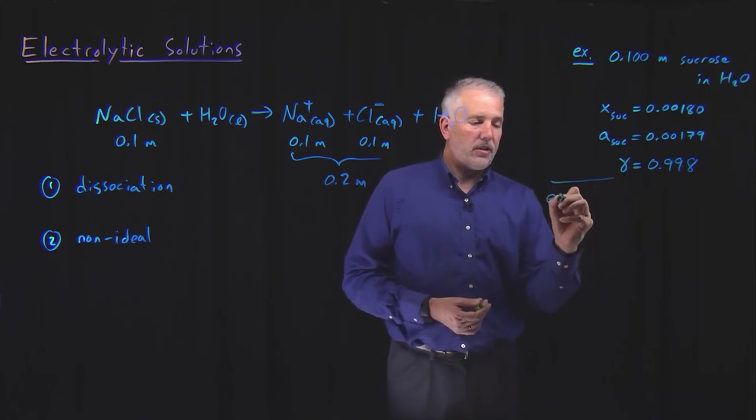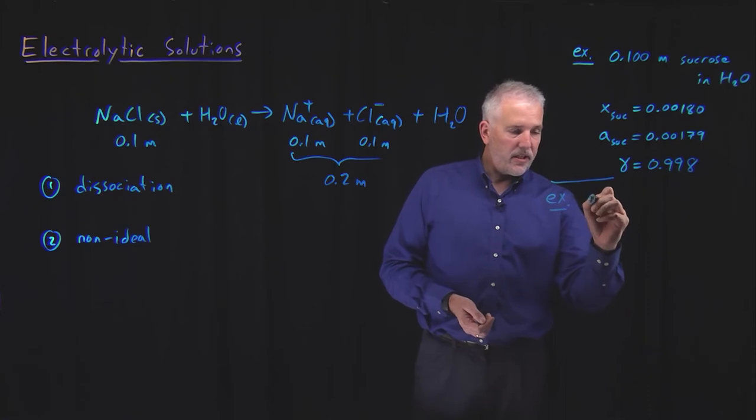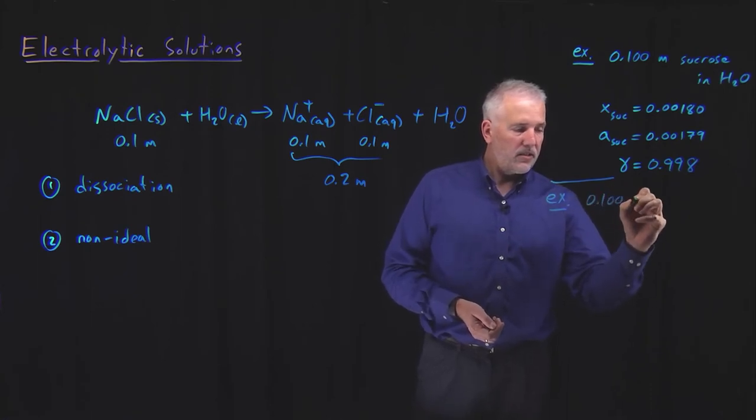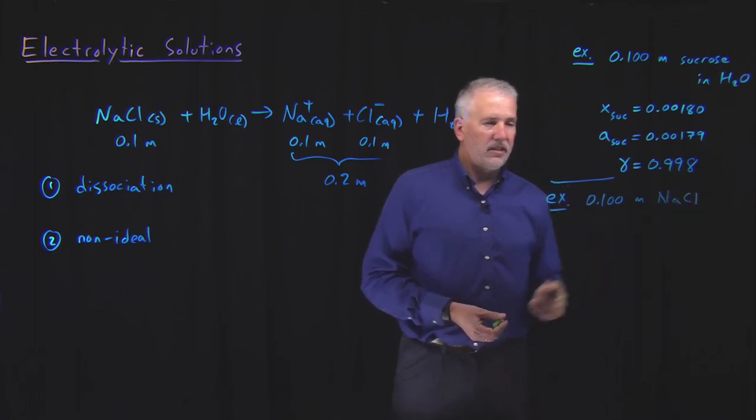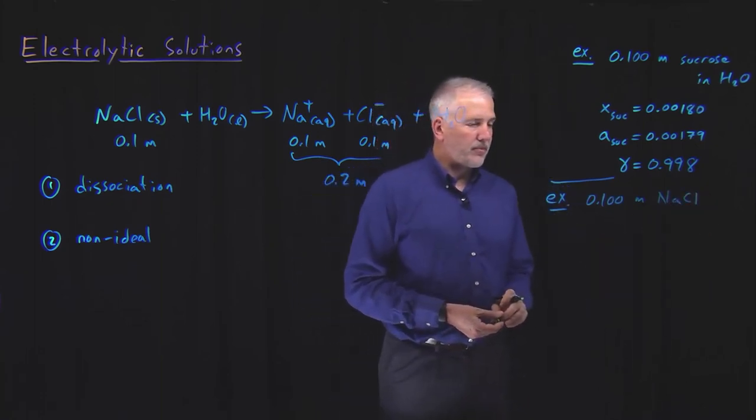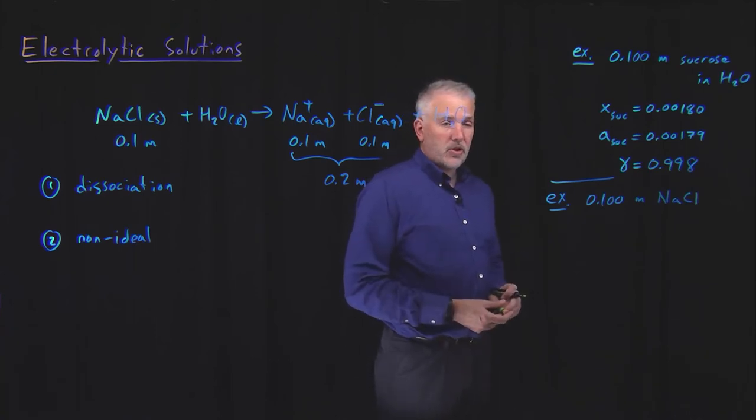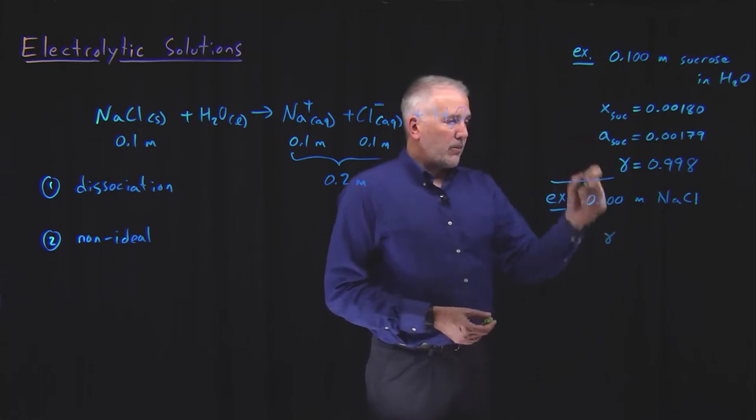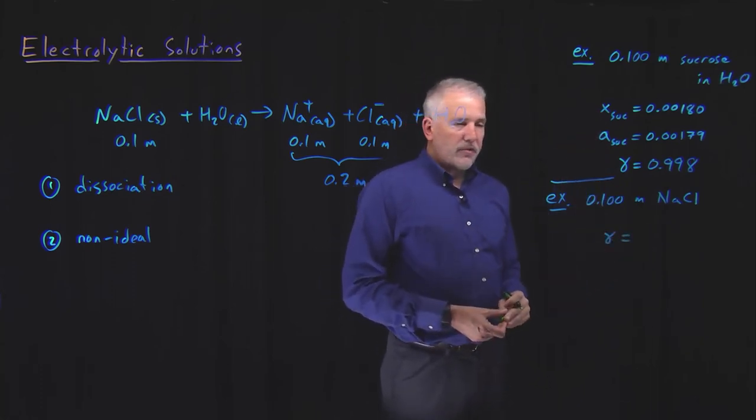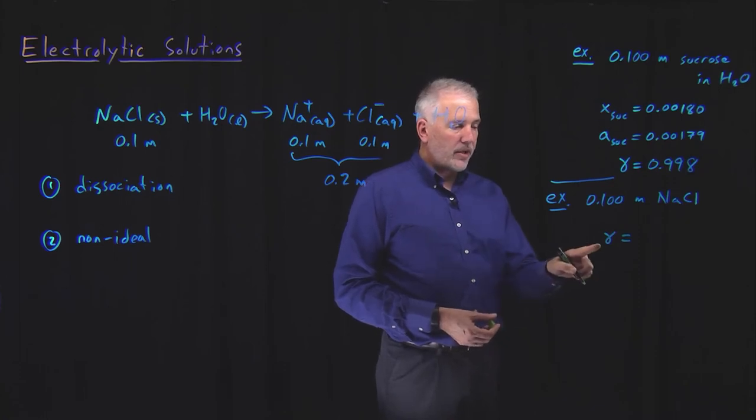But now let's see what happens when I prepare a solution that's, let's say, 0.1 molal in an ionic or an electrolytic solute, sodium chloride, for example. If I prepare a solution that's 0.1 molal in sodium chloride, I'll skip the intermediate steps, I'll just tell you what the activity coefficient is for this 0.1 molal sodium chloride solution, so we can judge how ideal it is.